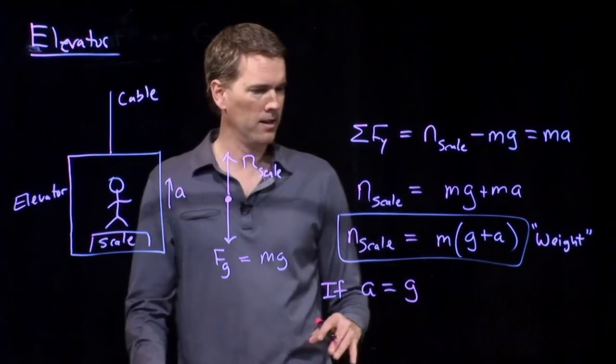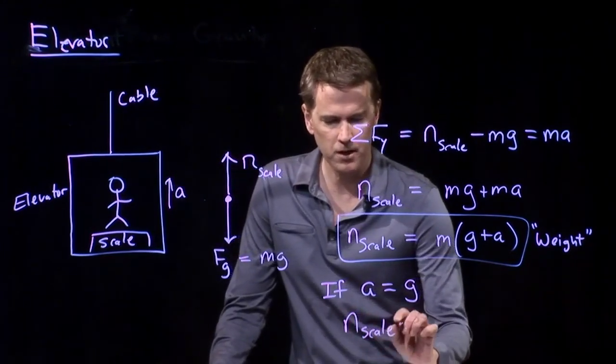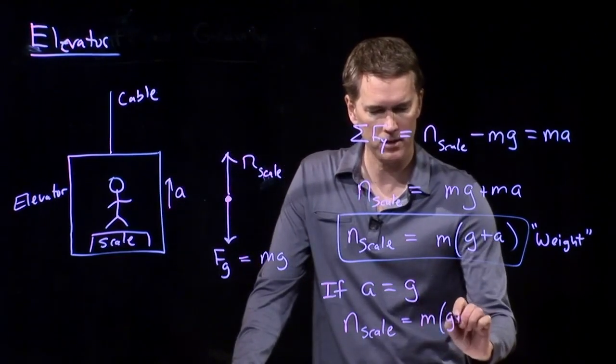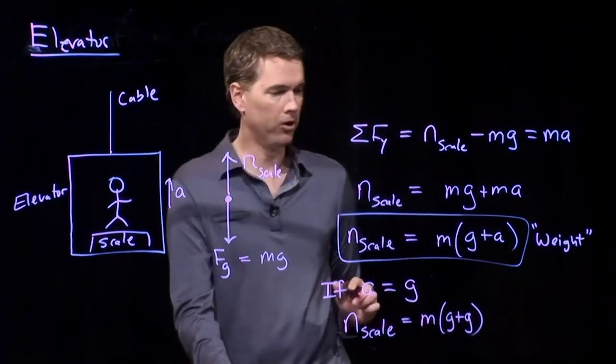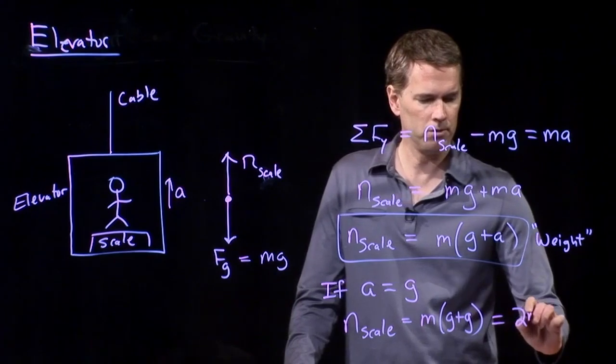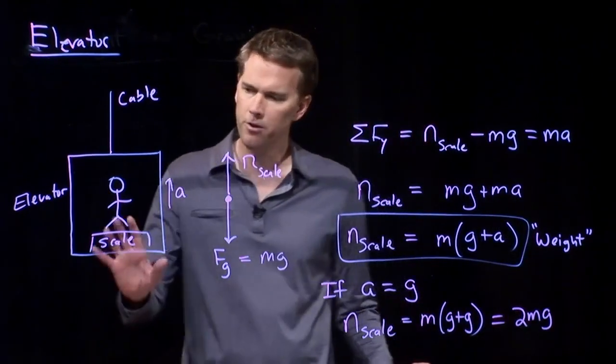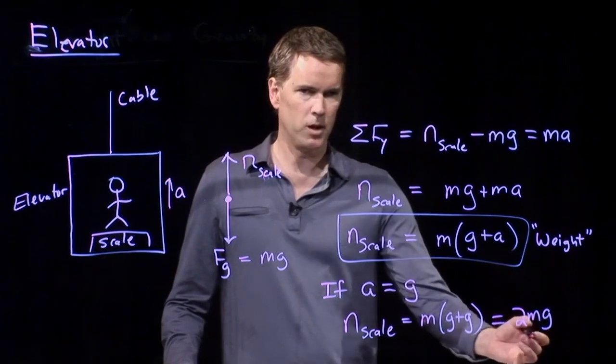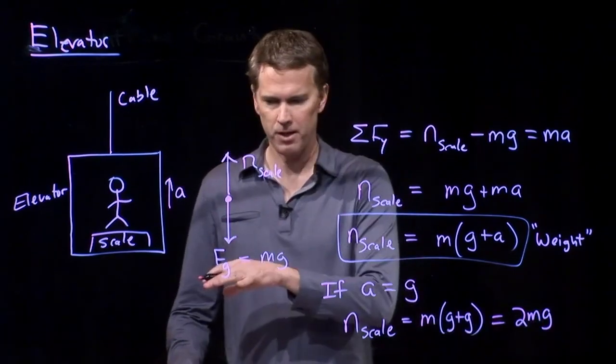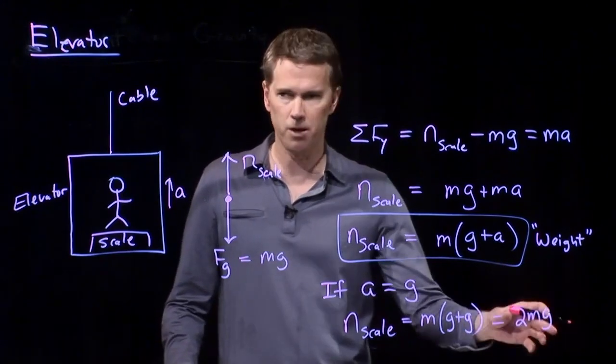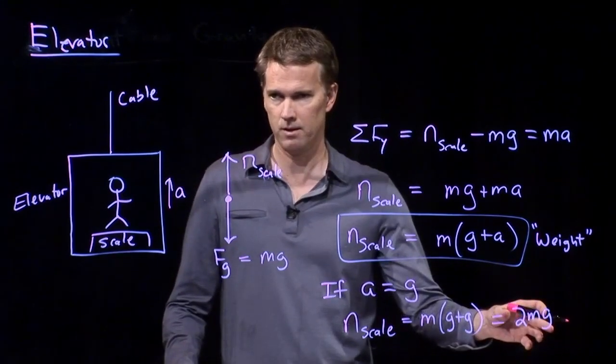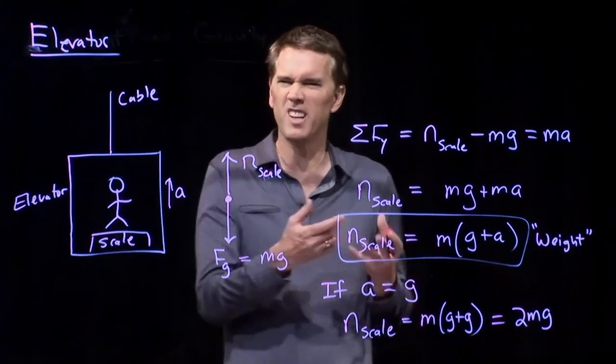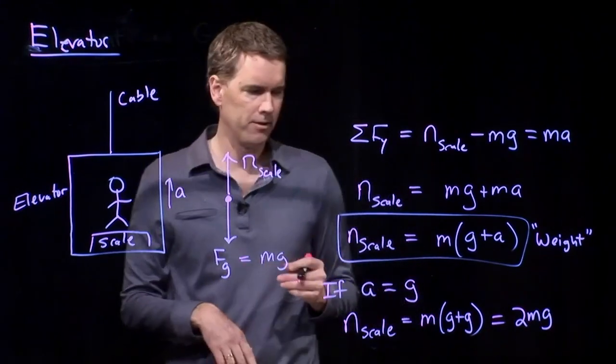But let's say it did. If it accelerates upwards with a magnitude of g, what do we get? We get n for the scale is g plus a, which is now another g. And we get 2 mg. So if this elevator accelerated up with g, you would suddenly feel twice as heavy. If you were 170 pounds initially, you would now be 340 pounds. You know elevators don't do that. I mean, when elevators accelerate upward, it's a small fraction of g. You feel a little bit heavier, but really not that much heavier.